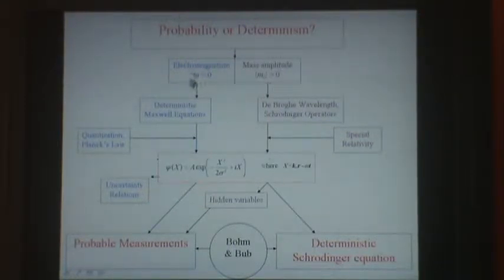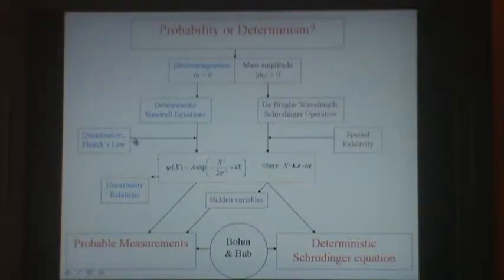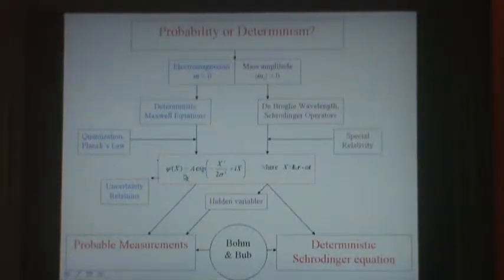We'll start with electromagnetism. It's very well understood, described by Maxwell's equations, and it's deterministic. To this we add quantization, described by Planck's law, and together we derive a travelling wave group.